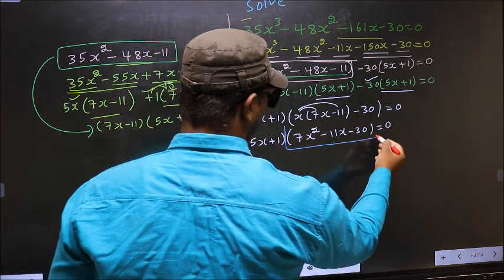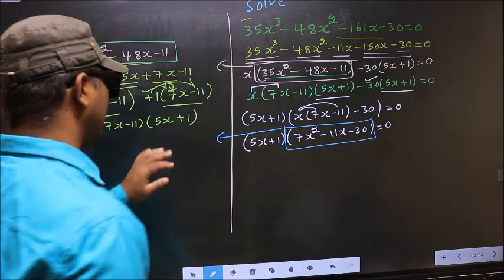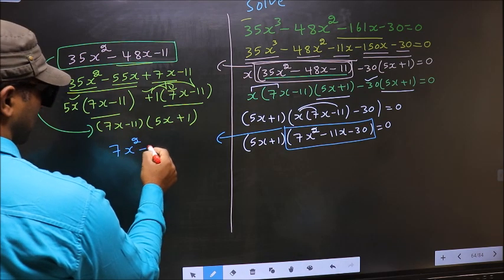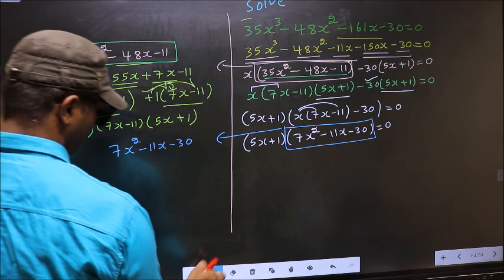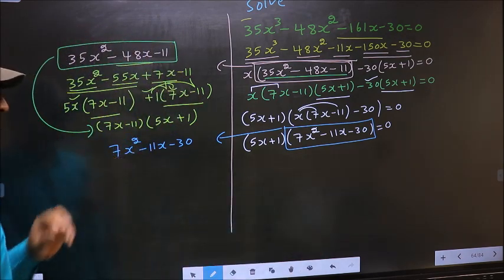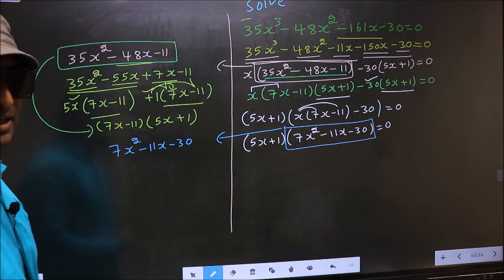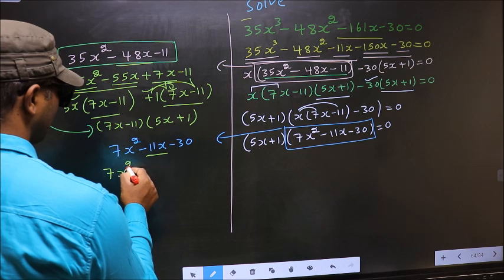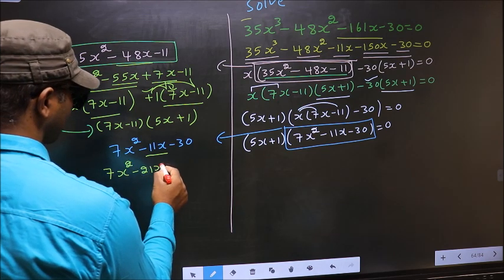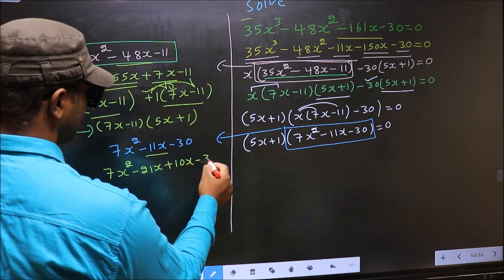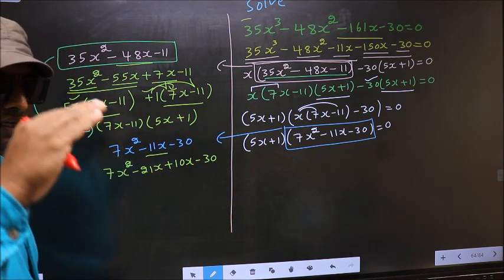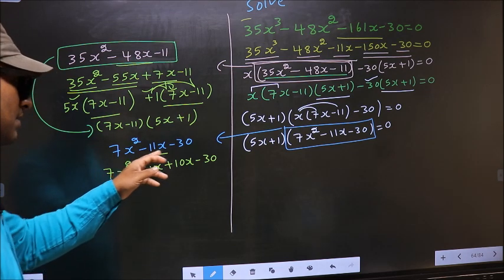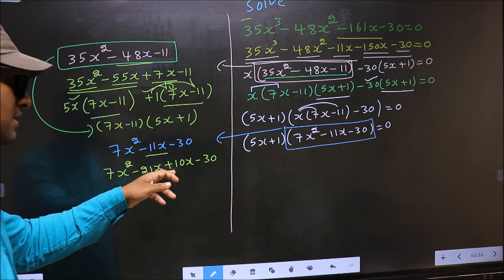Now we have another quadratic: 7x² minus 11x minus 30. To factorize this we split the middle term minus 11x. In place of minus 11x I write minus 21x plus 10x minus 30. Directly I have split minus 11x into minus 21x plus 10x.